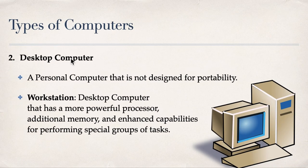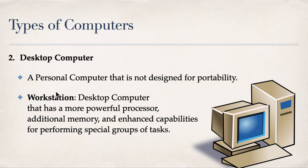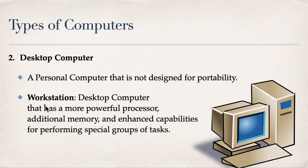The first type is the desktop computer — a personal computer that is not designed for portability; you put it on top of a desk. When you have a desktop computer, you may also have what we call a workstation: a desktop computer with a more powerful processor, additional memory, and enhanced capabilities for performing special groups of tasks.